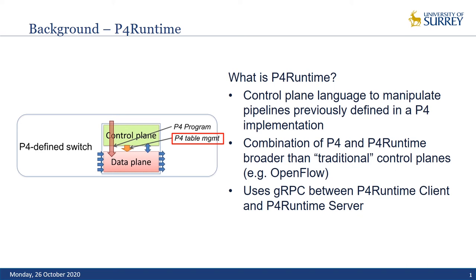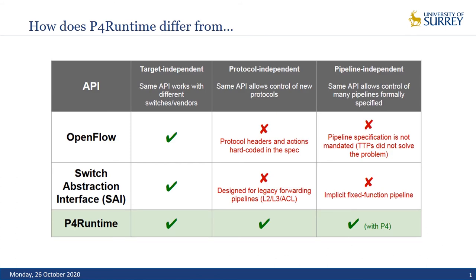I can program my switch once with a P4 program, exposing parts of that P4 program to P4 runtime. I can have an external actor — a P4 runtime client — that enables me to change the operation of that pipeline in flight. P4 combined with P4 runtime is target independent, pipeline independent, and protocol independent, unlike OpenFlow or switch abstraction, which use pipelines and protocols that have been predefined.